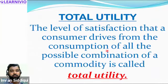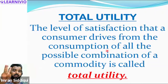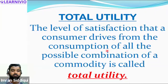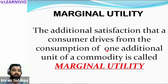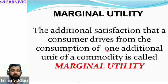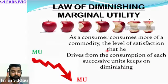Moving on — total utility is the total amount of satisfaction a customer derives from consumption of all units of a commodity. For example, if I have three apples and consume all three, the total satisfaction from all three units is called total utility. Marginal utility, on the other hand, is the amount of satisfaction derived from consuming one extra unit. If I consume one extra unit and get five utils of satisfaction, then five is the marginal utility.